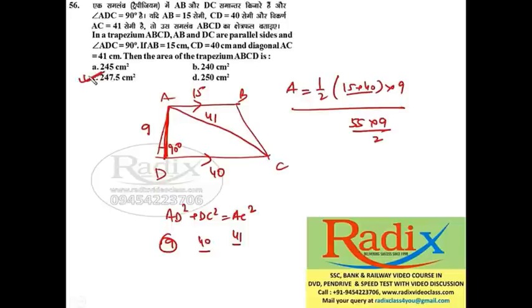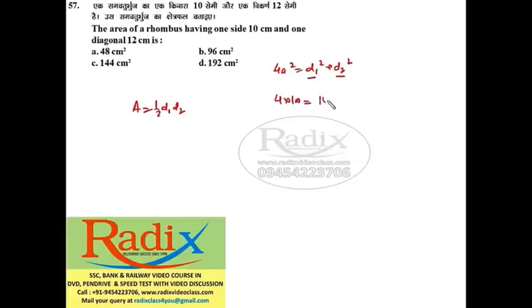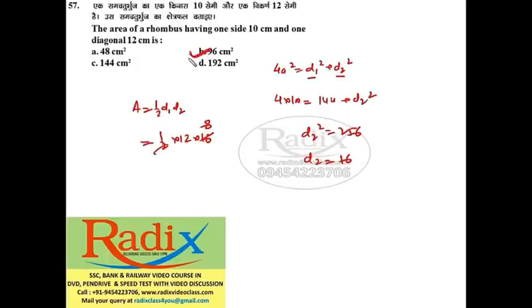Next: Area of a rhombus with one side 10 and one diagonal 12. Using the formula: 4·side² = d1² + d2², so 4·100 = 144 + d2², giving d2² = 256, so d2 = 16. Area = (1/2)·d1·d2 = (1/2)·12·16 = 96. Answer is option B.